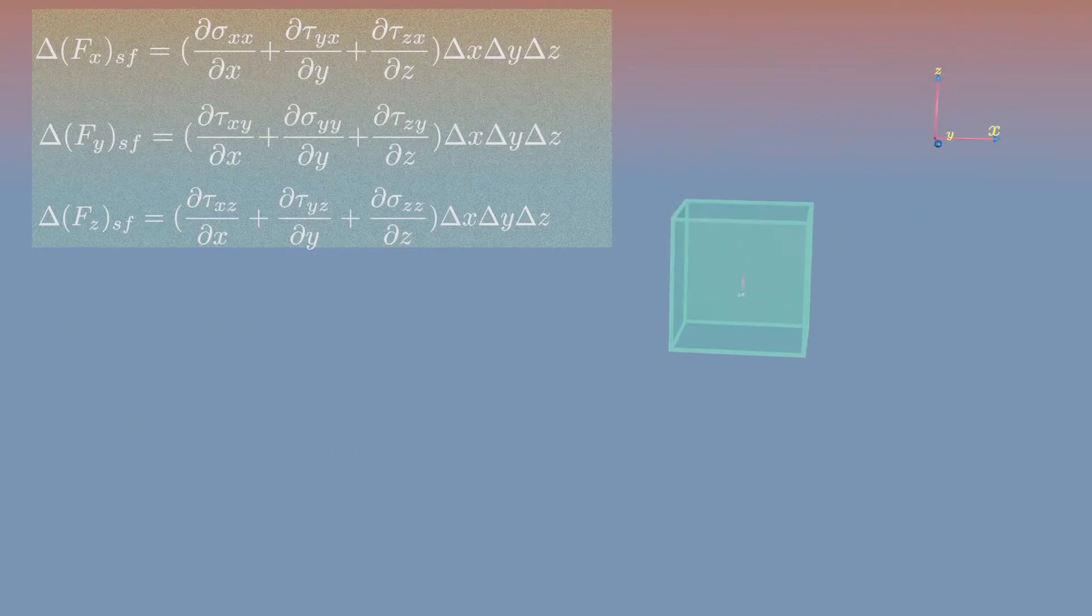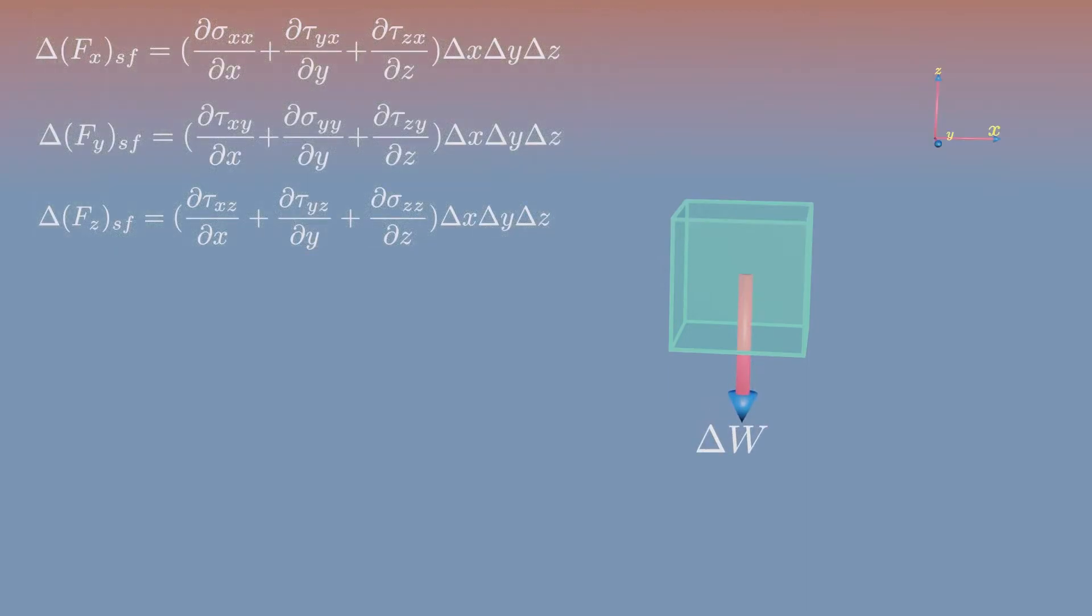Apart from these forces, there is also the body force due to the weight of the particle. If delta M is the particle mass, the force would be mass times acceleration due to gravity. Now simplify mass as density times volume.